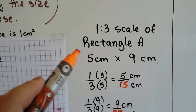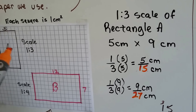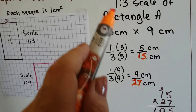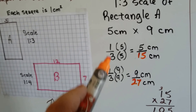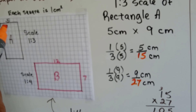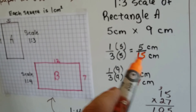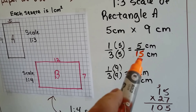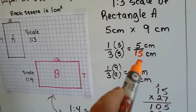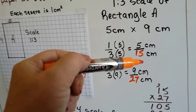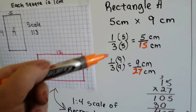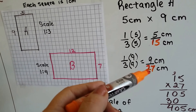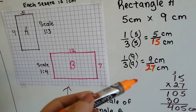We have a one-to-three scale of Rectangle A, and it's five centimeters by nine centimeters. Since our scale is one to three, we write it as a fraction and multiply. Five over fifteen — that's a one-to-three ratio, because five-fifteenths is one-third. And the one-to-three ratio for the nine would be nine over twenty-seven — that's one-third as well.